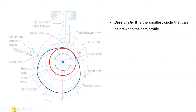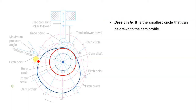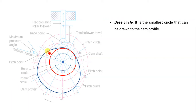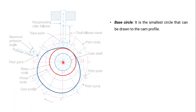Don't get confused — the smallest circle does not mean just any small circle. The center of this circle must be the same as the center of rotation. That kind of circle is called the base circle.